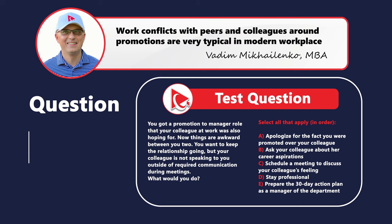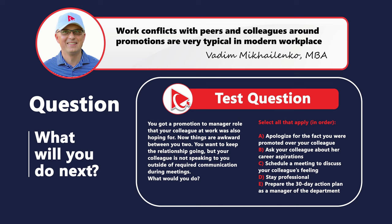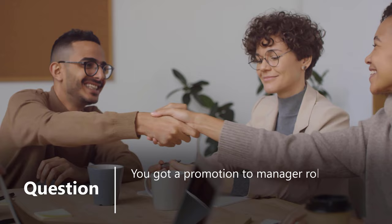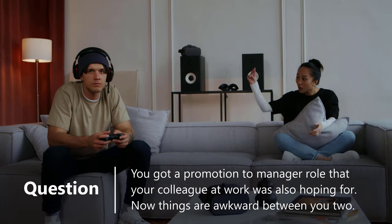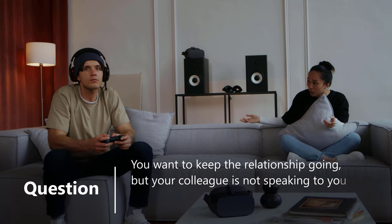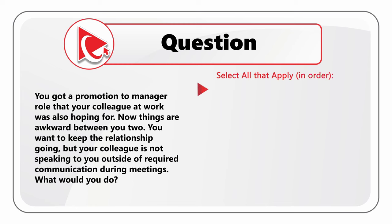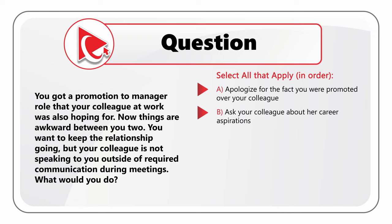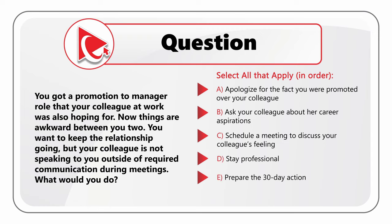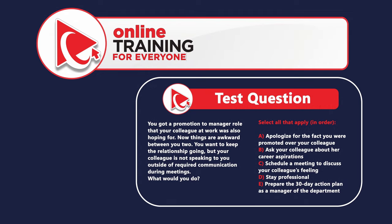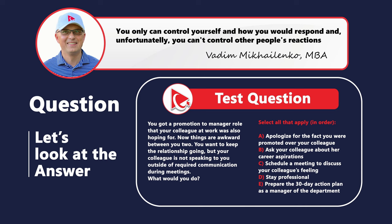A lot of times during the test you might be presented with a very uncomfortable situation. Here's one: you got promoted to a manager role that your colleague was also hoping for. Things are now awkward — your colleague is not speaking to you outside of required communications. You have five choices, select all that apply in order: A) Apologize for being promoted over your colleague; B) Ask your colleague about her career aspirations; C) Schedule a meeting to discuss your colleague's feelings; D) Stay professional; E) Prepare a 30-day action plan as manager of the department.